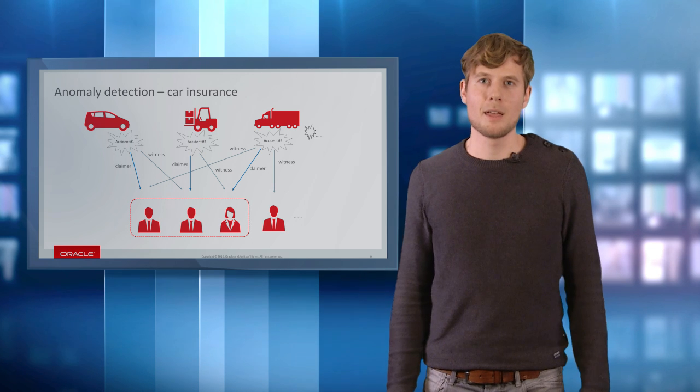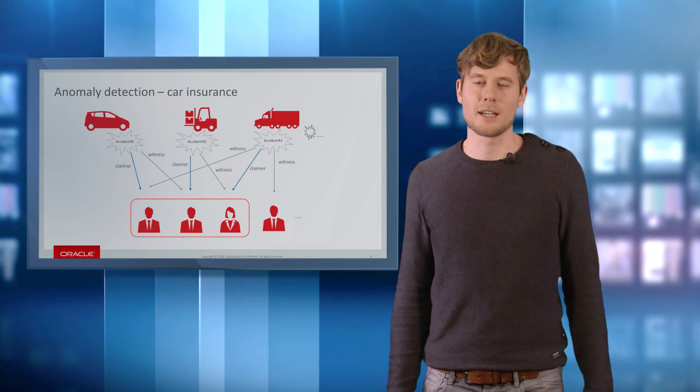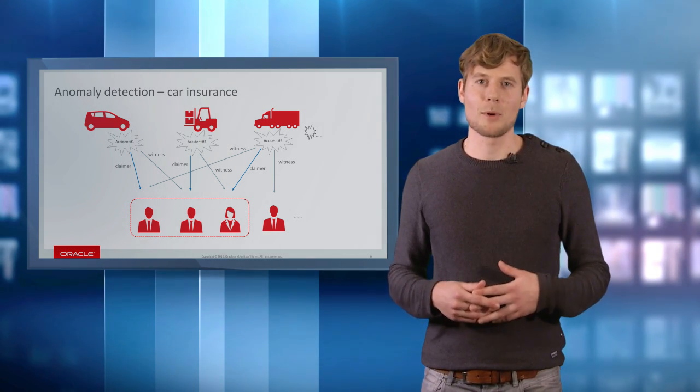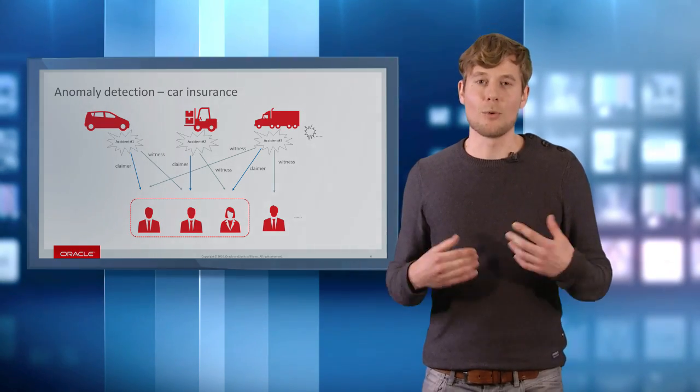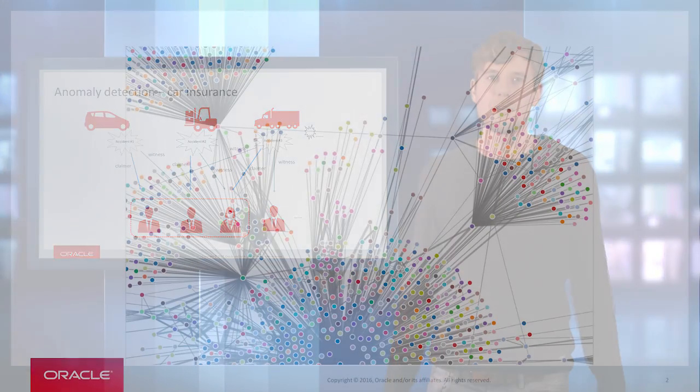You've found a fraud ring. The fraud ring is latent information encoded in your data. It only becomes visible when you look at your data as a graph, rather than a set of disconnected rows in a relational database.